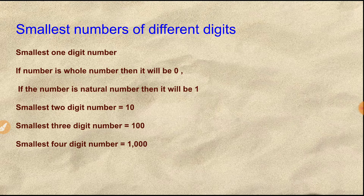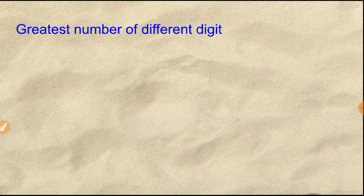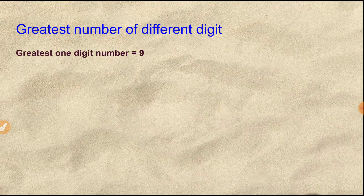Similarly, the smallest 4-digit number is 1000, the smallest 5-digit number is 10,000, and the smallest 6-digit number is 1 lakh (1,00,000). Now let's see the greatest number of different digit counts.